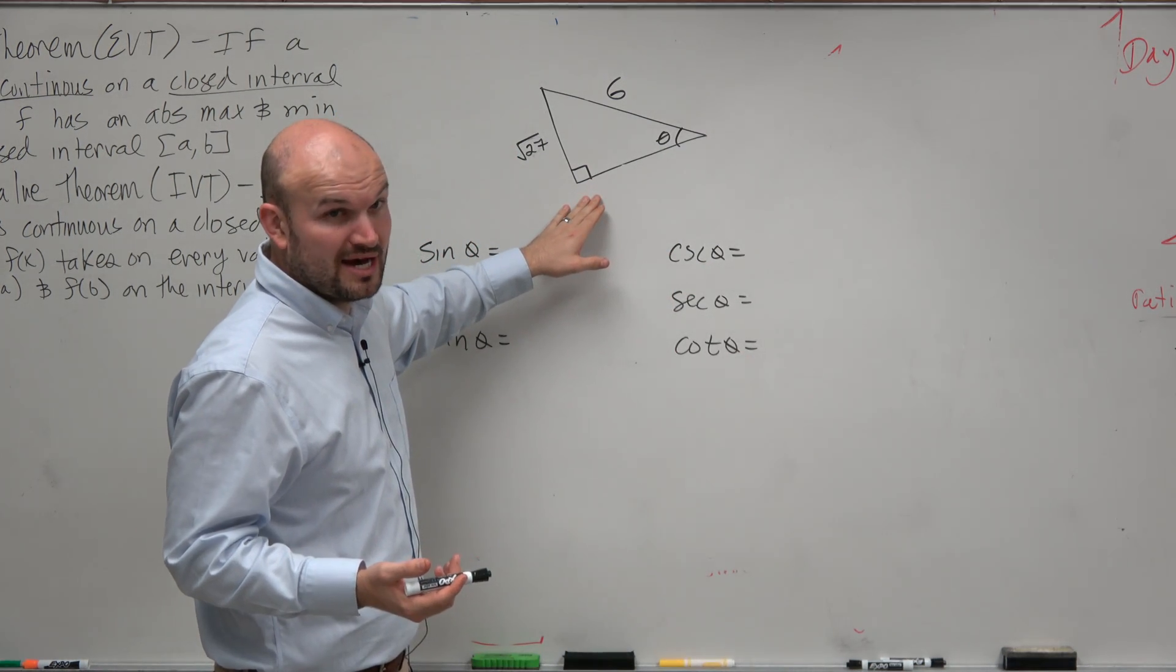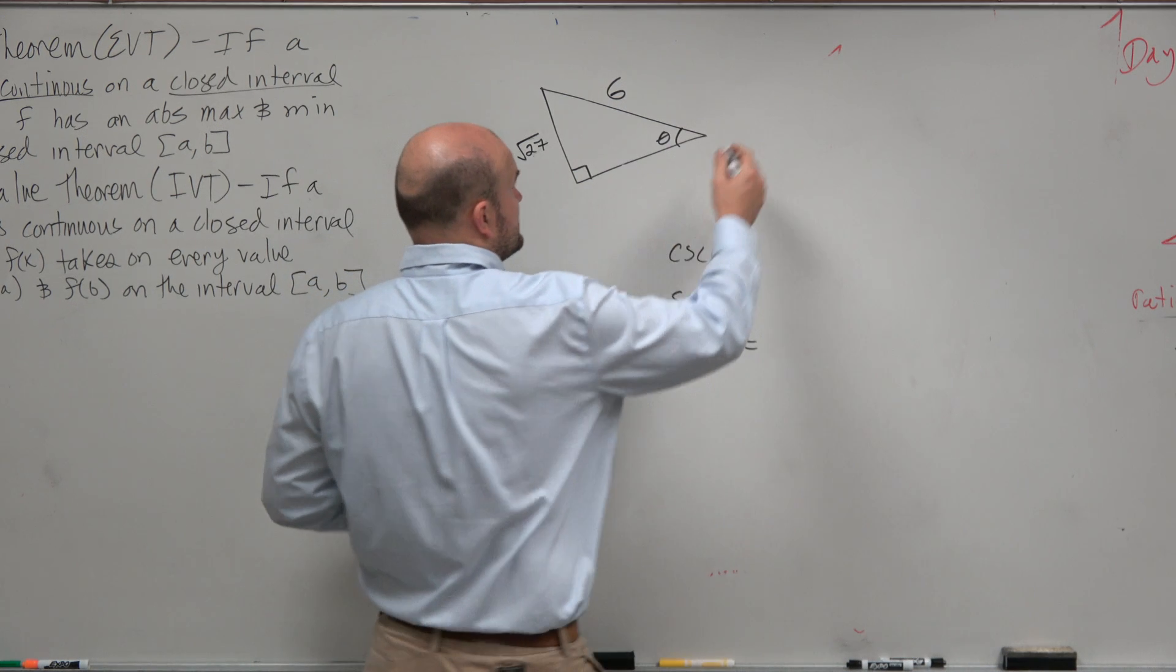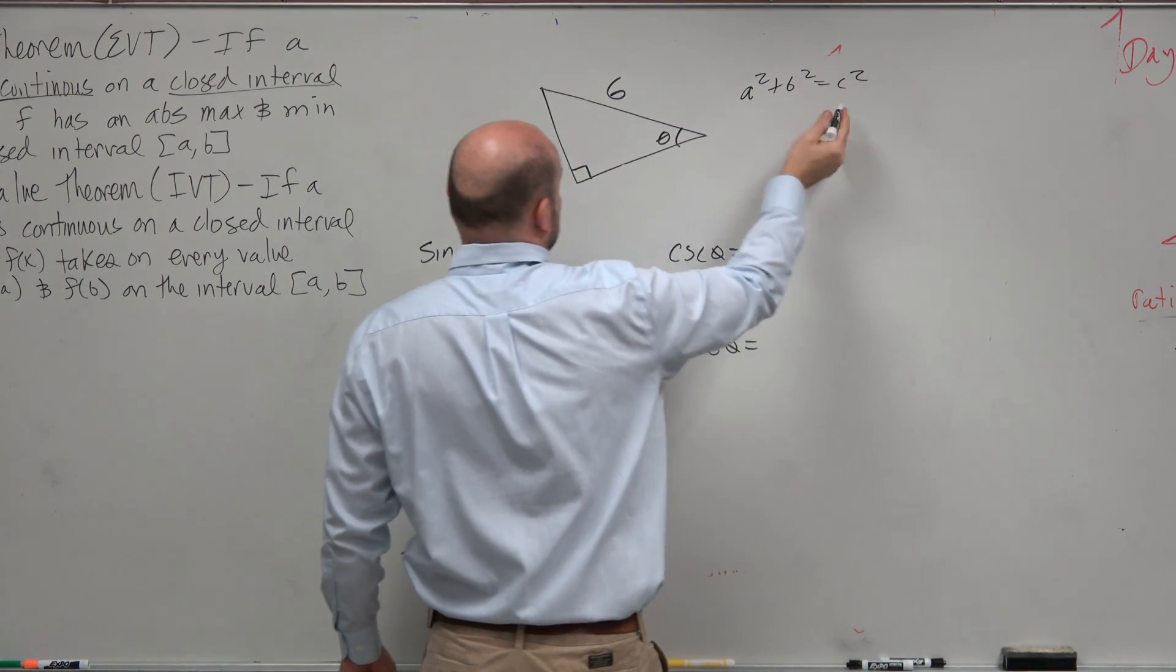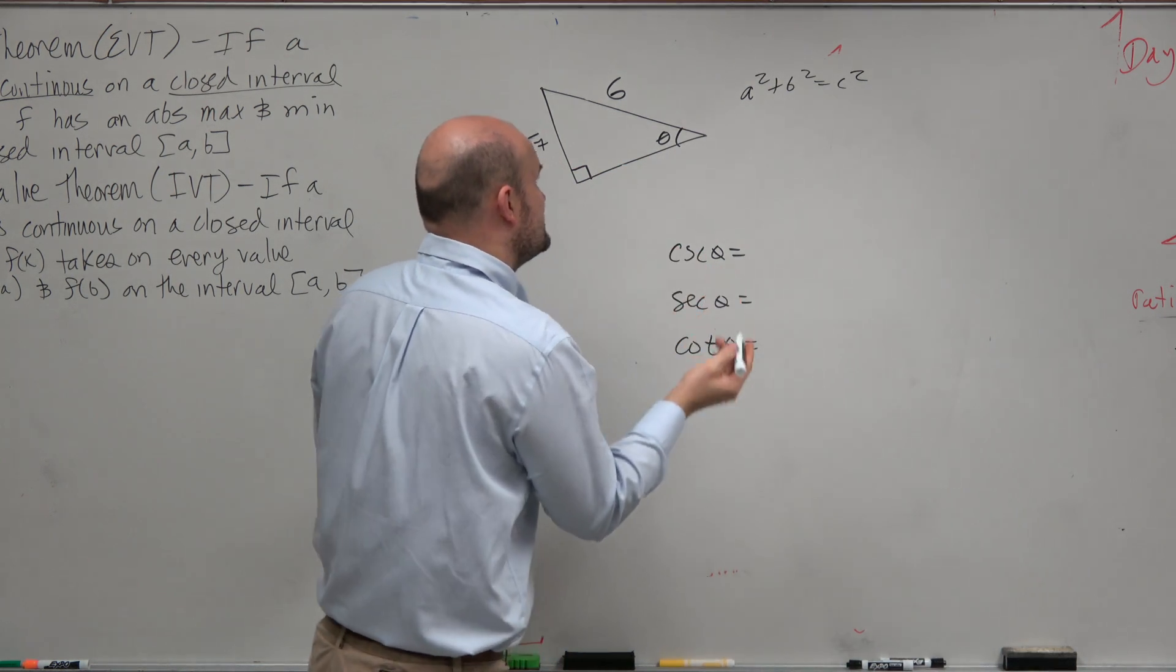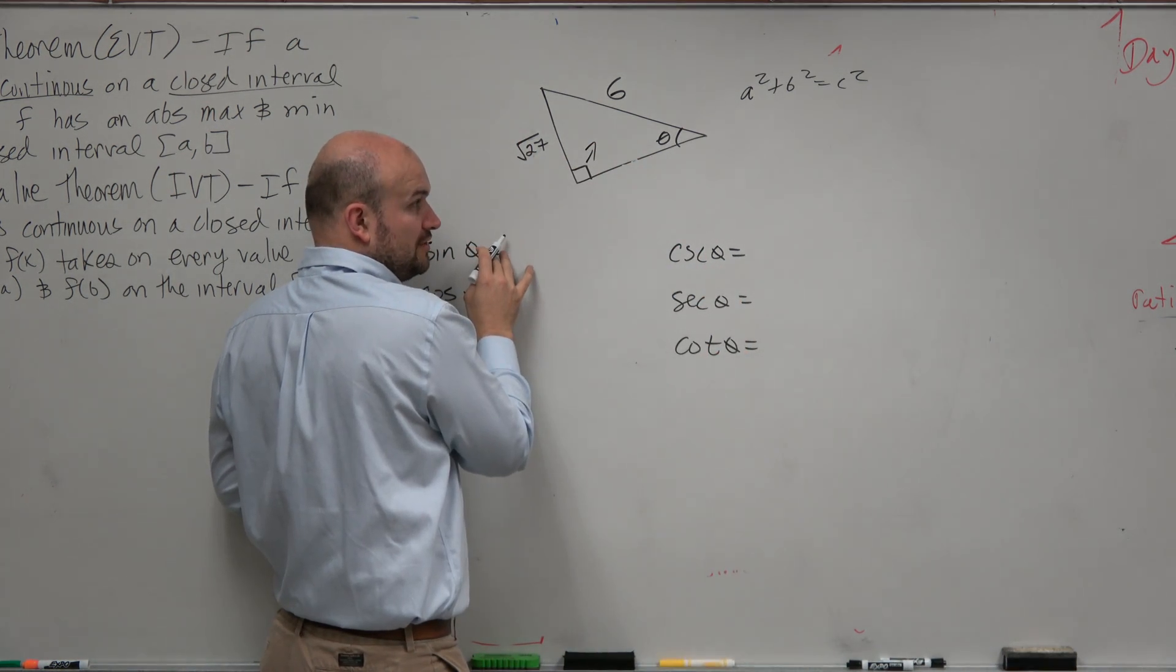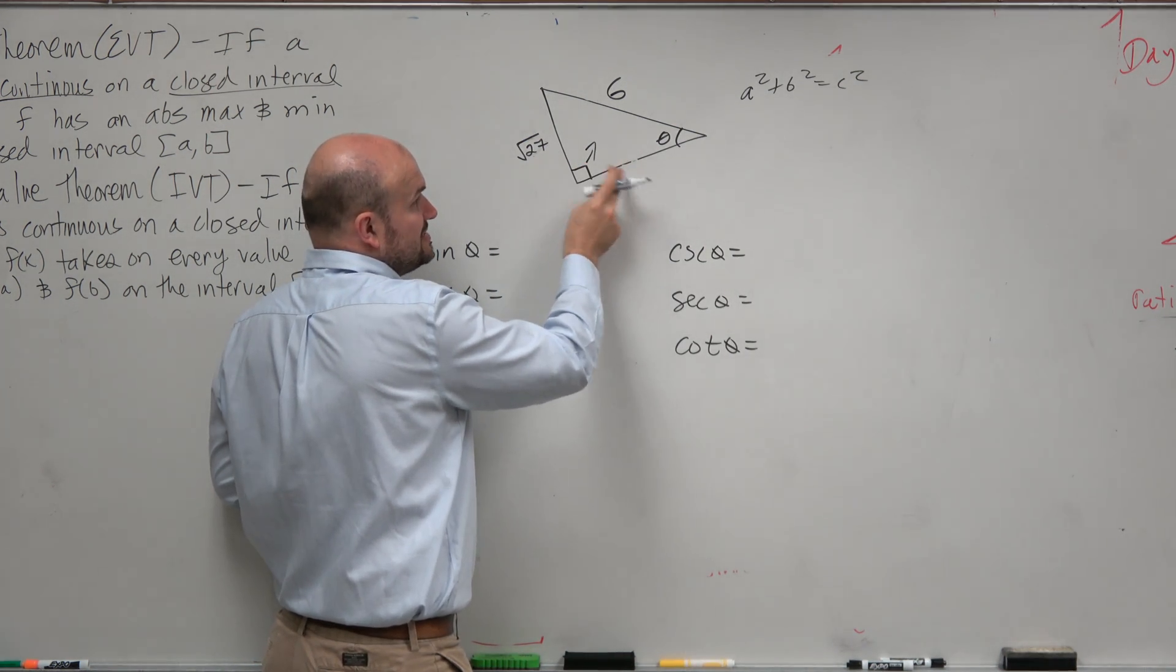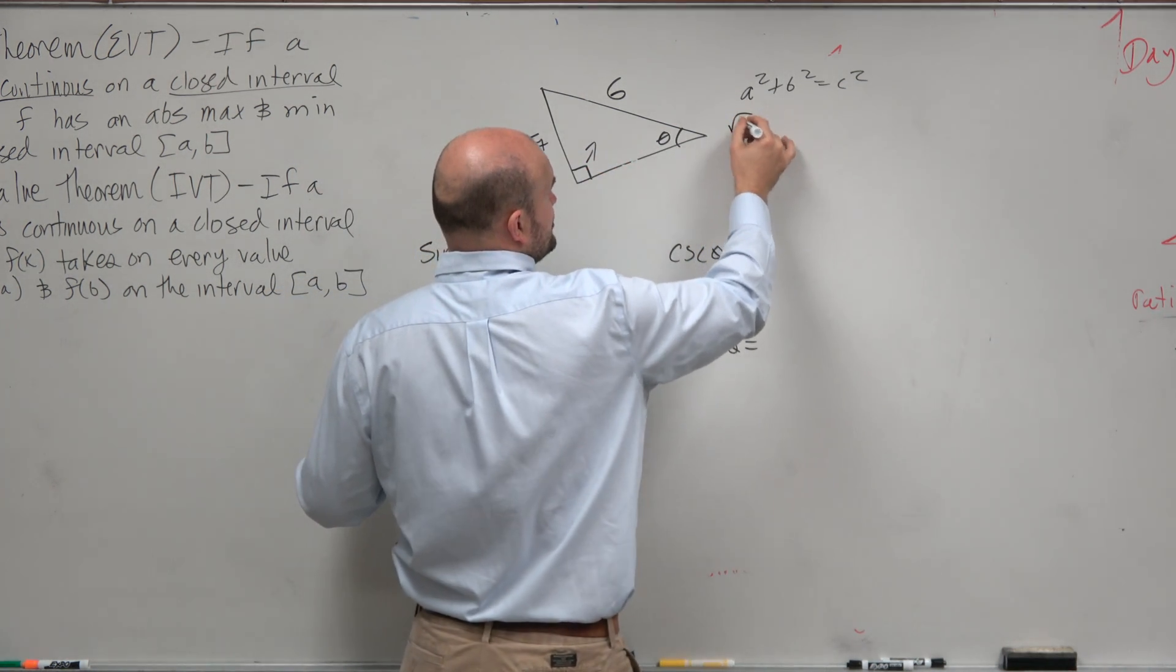Therefore, we can at least apply the Pythagorean theorem. We could say a squared plus b squared equals c squared. Remember, your hypotenuse is always directly across from your 90-degree angle. So therefore, these are your two legs. Doesn't matter if this is a, that's b, or if this is a, that's b. Just go ahead and choose.